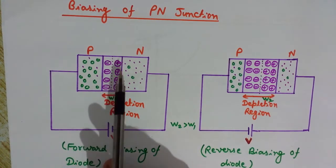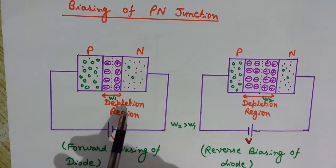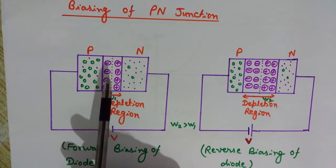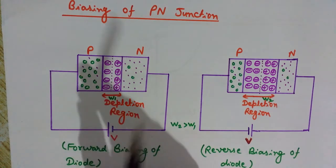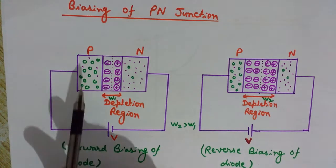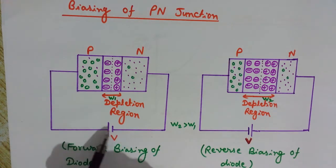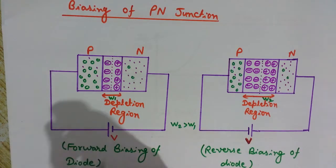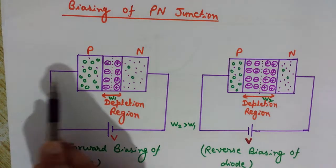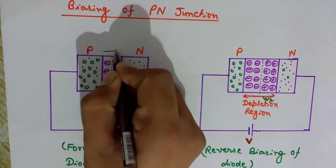In the depletion region we do not have any charge carriers — that is why it is known as the depletion region, because it is depleted of all charge carriers. In forward biasing we connect the P terminal at higher potential and the N terminal at lower potential. Because of this forward biasing, we have an electric field from P to N side.